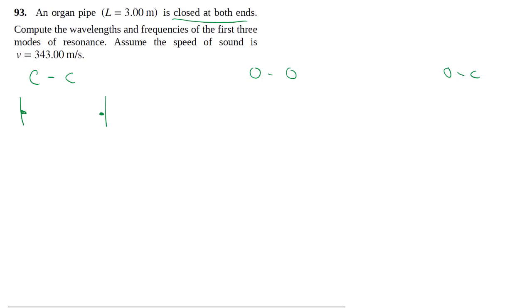no displacement, or nodes, at the two ends, whereas for an open-open system you need antinodes, or maximum displacement, at the two ends. So the pattern that fits here is one of these humps, whereas for the open